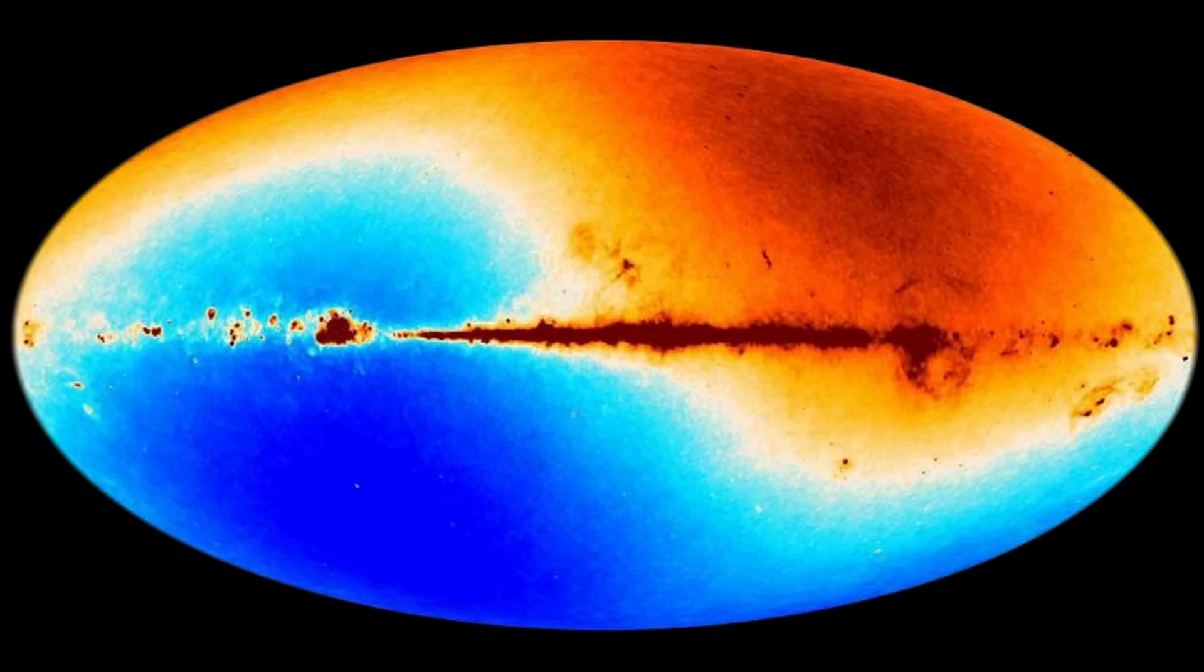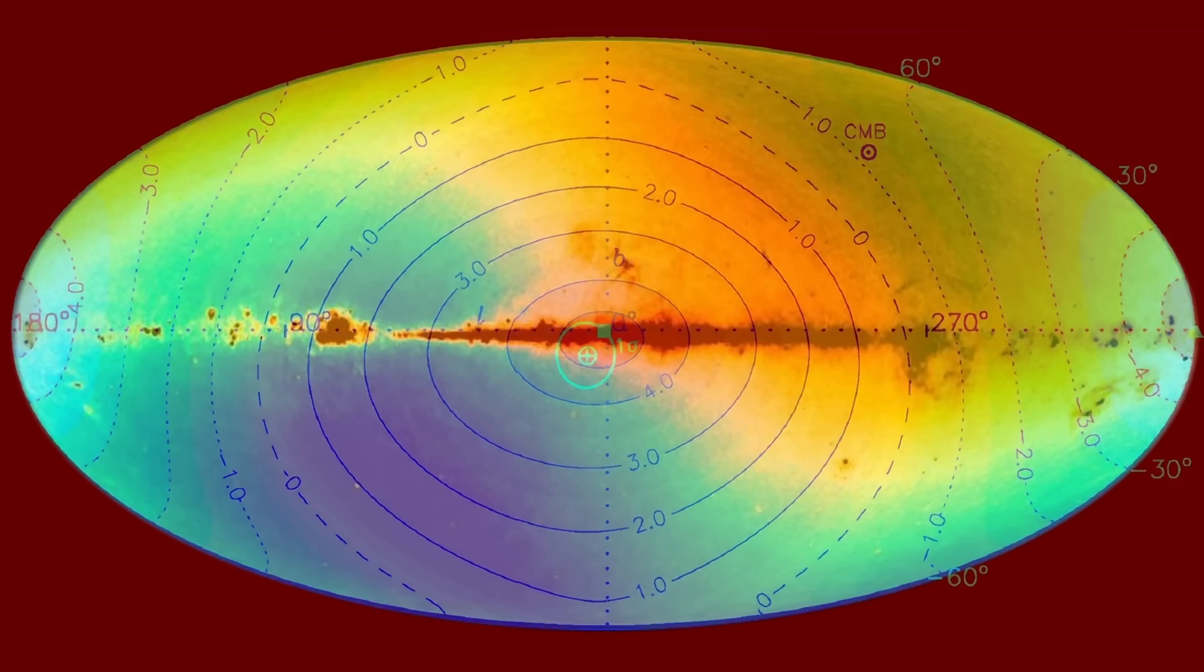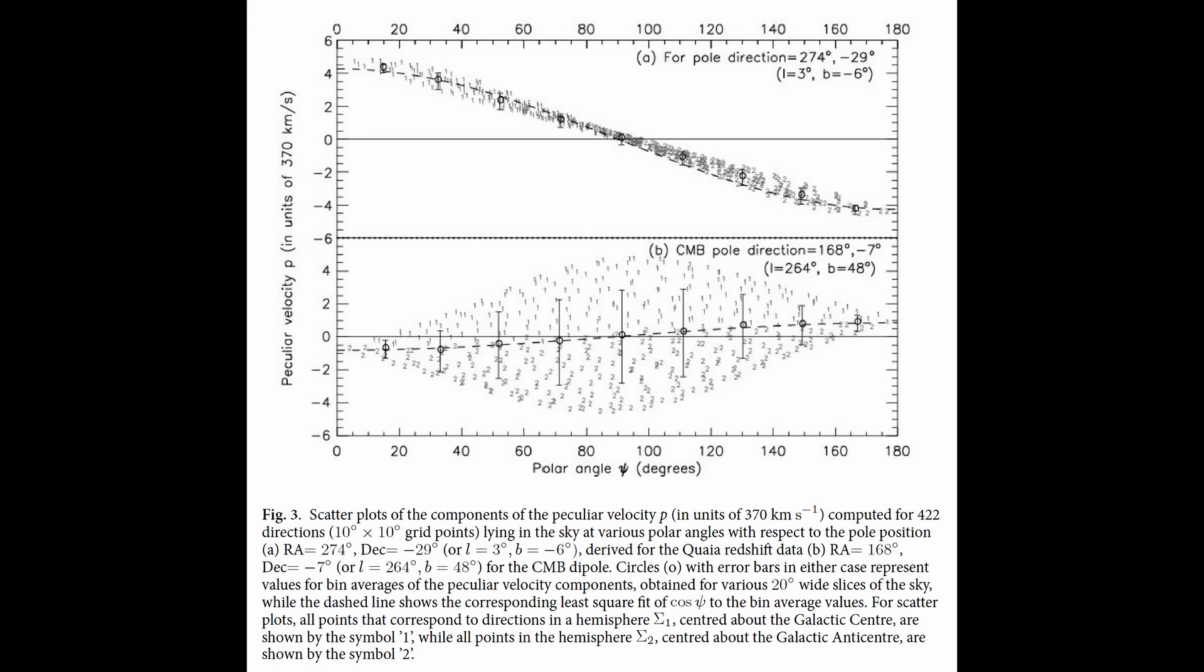If both were truly measuring the same velocity, they would agree. Instead, the quasar dipole points almost exactly 90 degrees away, showing no trace of the CMB direction. That makes it impossible for both to represent our actual motion through the universe.